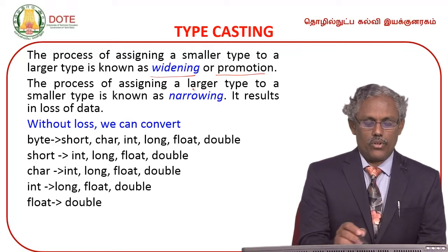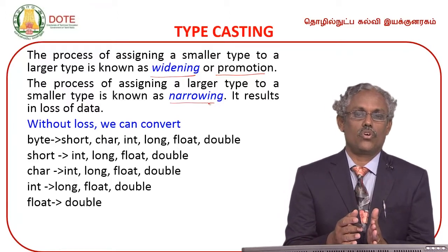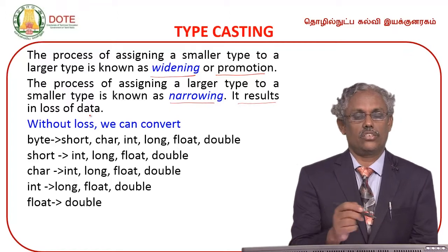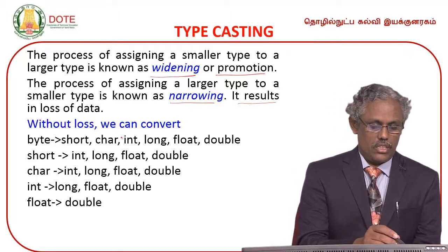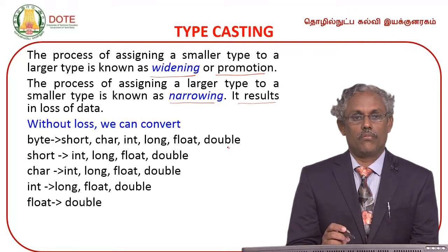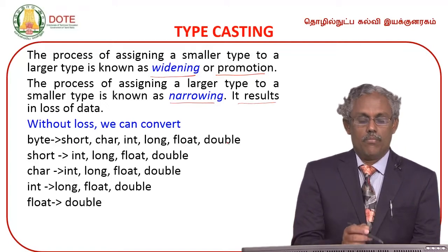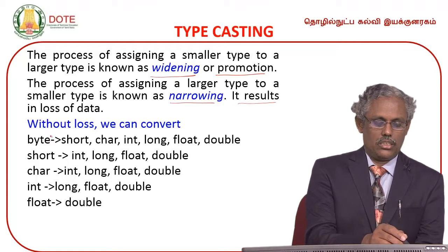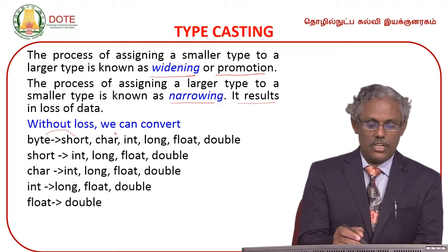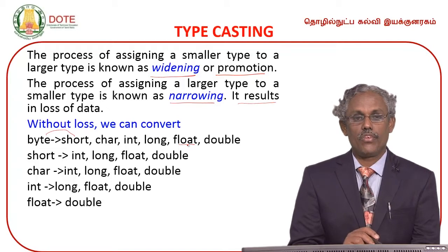The process of assigning a larger type to a smaller type is known as narrowing, but narrowing will result in loss of data. Without loss, we can convert types automatically. For example, a byte with an int type expression results in int type. Byte with short results in short type. Byte with float results in float type.